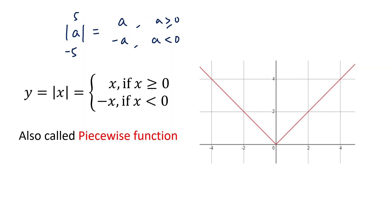For an absolute value function, the idea is totally the same. When x is greater than or equal to zero, y equals x — a straight line. And when x is smaller than zero, y equals negative x — the other line. This graph is also called a piecewise function: a function defined by different expressions when x is in different value ranges.